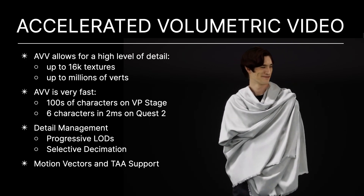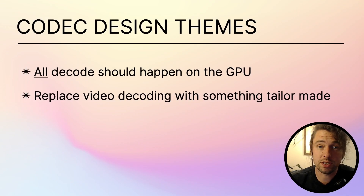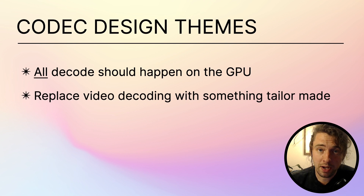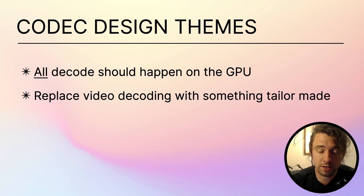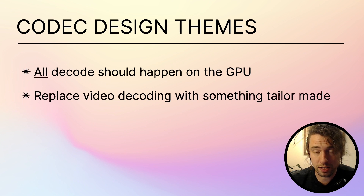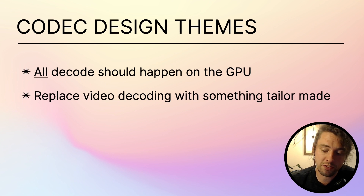To make all of this work, we settled on a couple of core design themes for the codec. The first design theme is to move everything to the GPU — we want to minimize the total IO cost by not moving inflated data across the bus and take advantage of the massive parallelism there. The second design theme is that video texture decoding is causing too many headaches: synchronization difficulties and bottlenecks to practically address. So let's replace video decoding with something tailor-made for volumetric video.